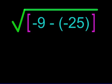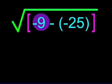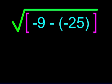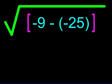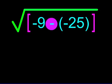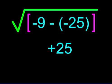Suppose we had the square root of negative 9 minus a negative 25. This time we see brackets surrounding negative 9 and negative 25. So this tells us we have to solve what's in the brackets first before we can try to find the square root.